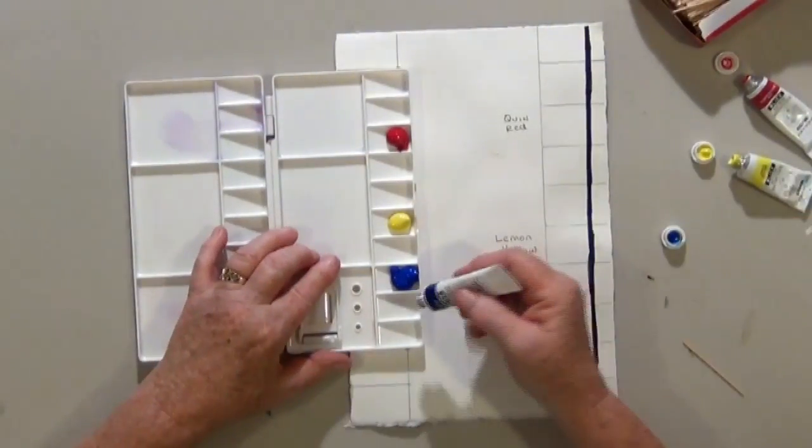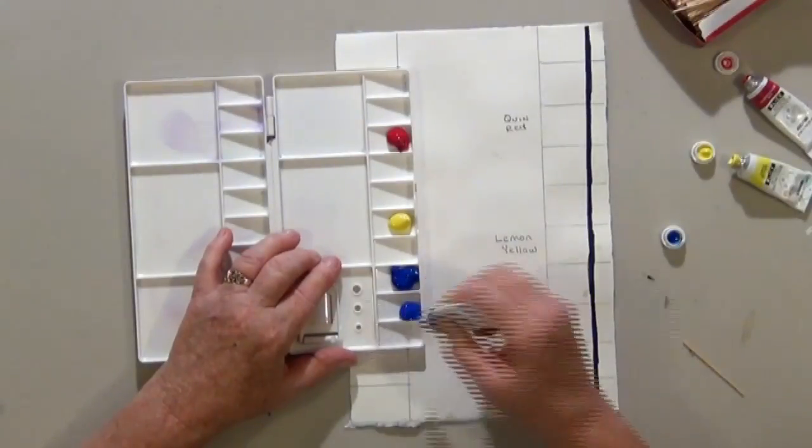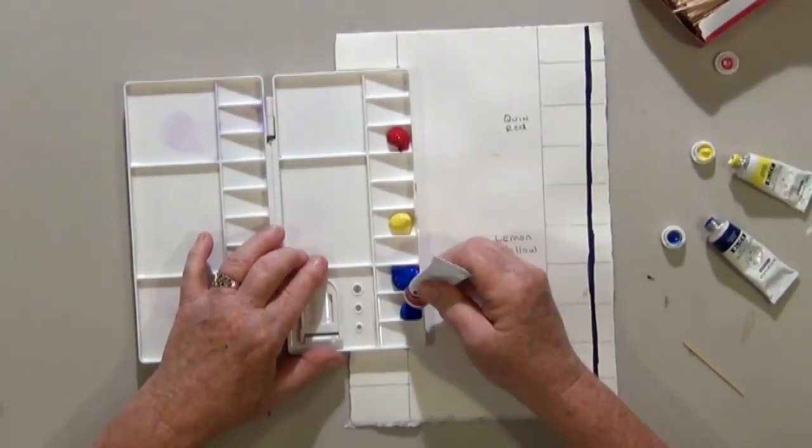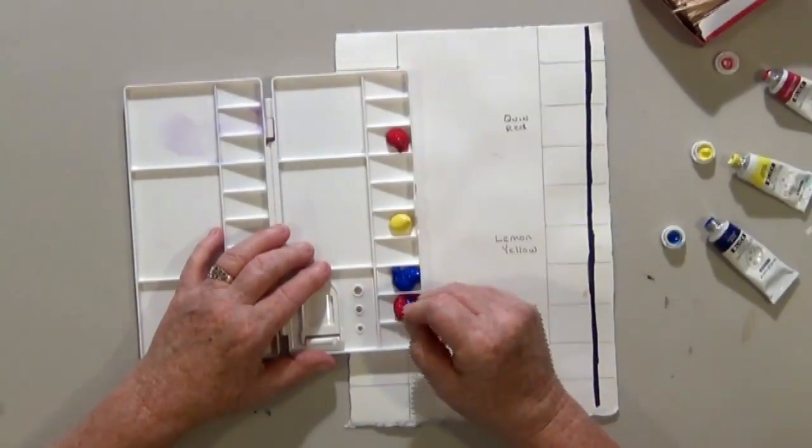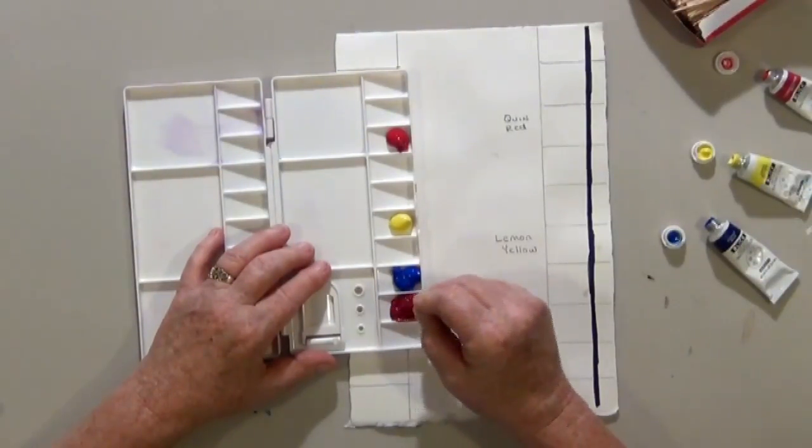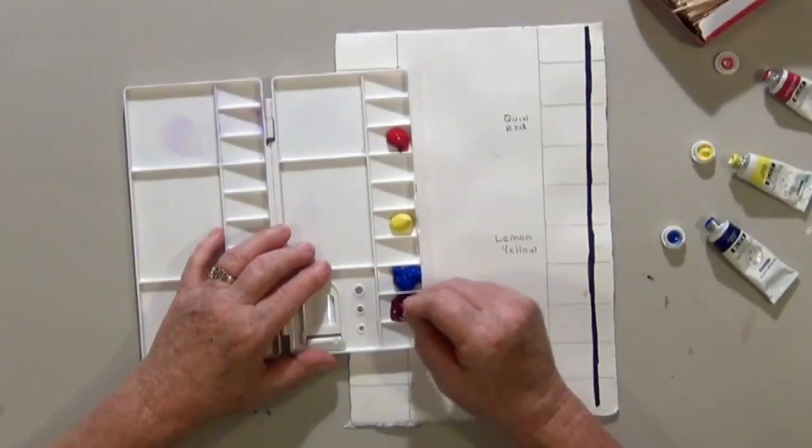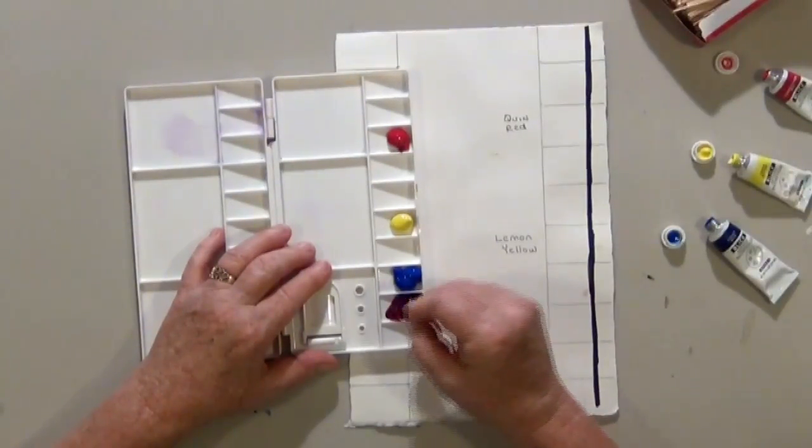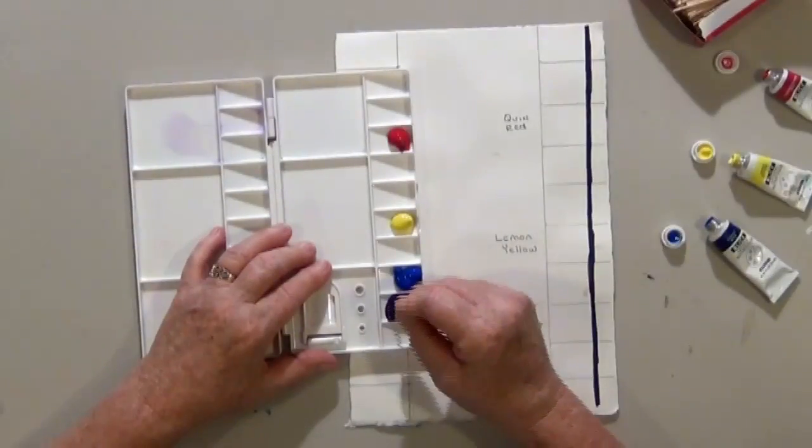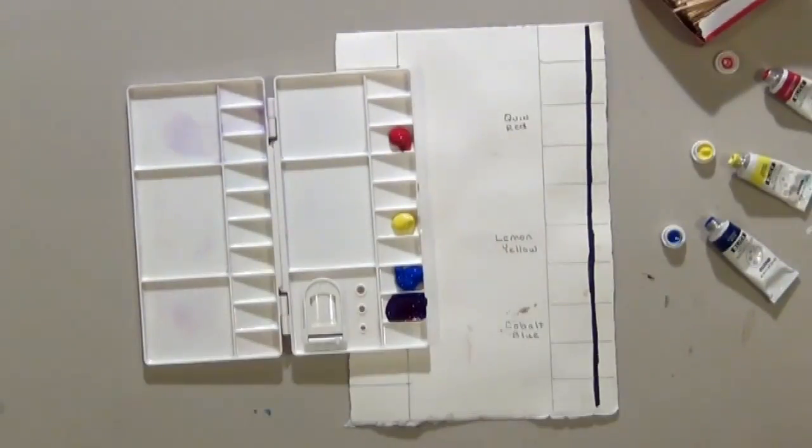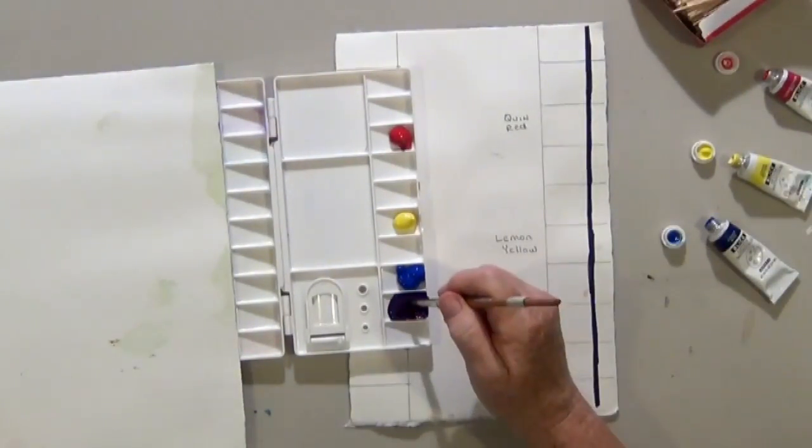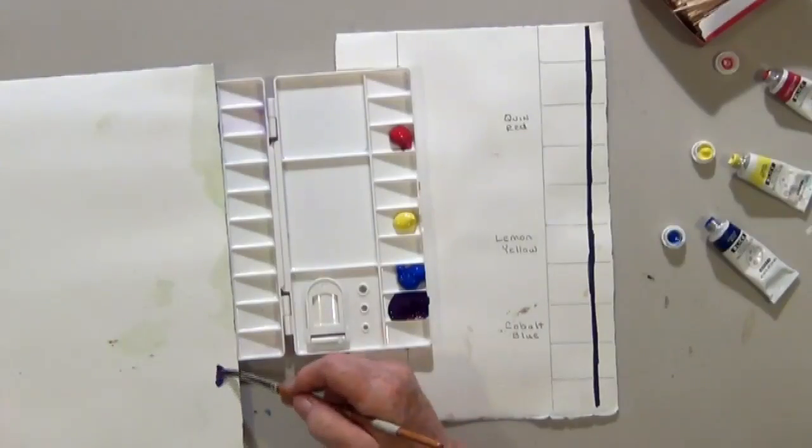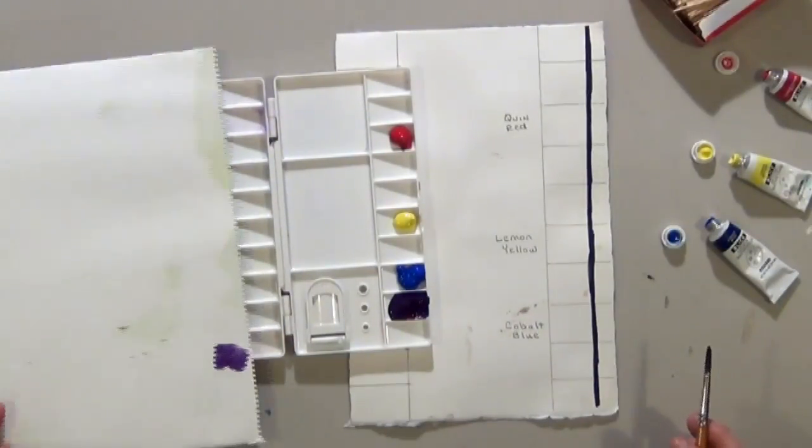First, I'm going to mix maybe half blue and half red. These three colors are very similar in strength, but I don't know if I'll get a real purple. Let's just see what we get. Here's a piece of scrap paper we can even test it on. So you can see even before we do our little color chart. That's a pretty nice purple.